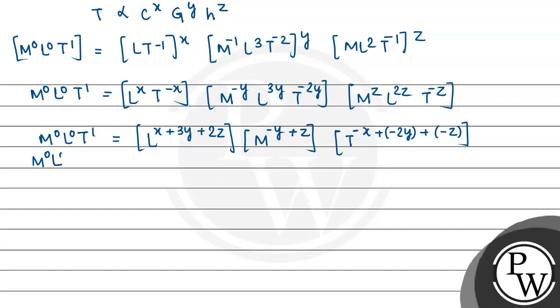Similarly, M powers will add up: M minus y plus z. Next, T to the power will be minus x plus minus 2y plus minus z. So M to the power 0, L to the power 0, T to the power 1 equals L x plus 3y plus 2z, M minus y plus z, T minus x minus 2y minus z. Now we equate the powers. M to the power 0 here, and there it's minus y plus z. So from here we get z equals y. This is our first equation.